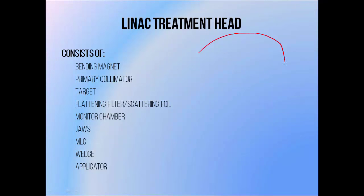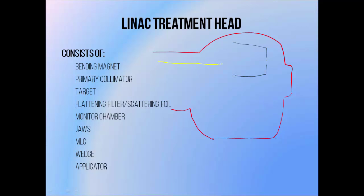When the high energy electron beam exits an accelerating waveguide it's generally not pointing at the patient — it's moving parallel to the floor. The first component of the treatment head is a bending magnet which points the beam towards the patient. Below this is an x-ray target which can be put in the way of an electron beam if we want to turn it into a photon beam, or pulled out of the way if we want to treat with an electron beam instead.